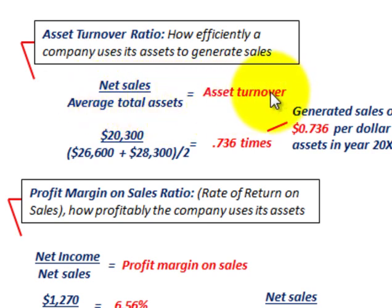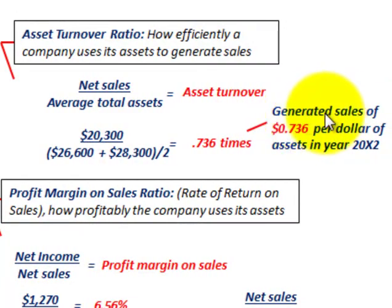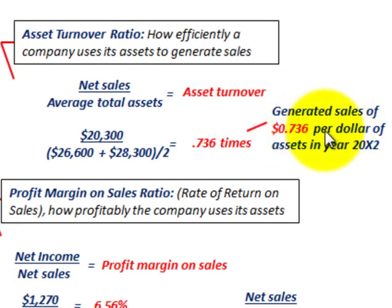That's our asset turnover. Remember, this generates sales of x dollars — in this case $0.736 — per dollar of assets being used for the year.